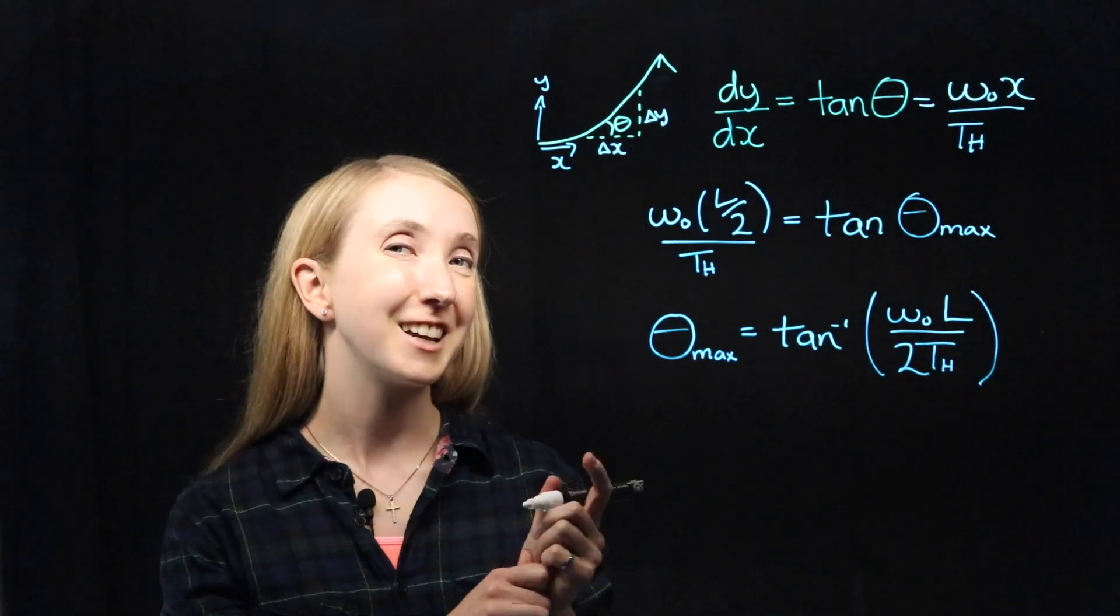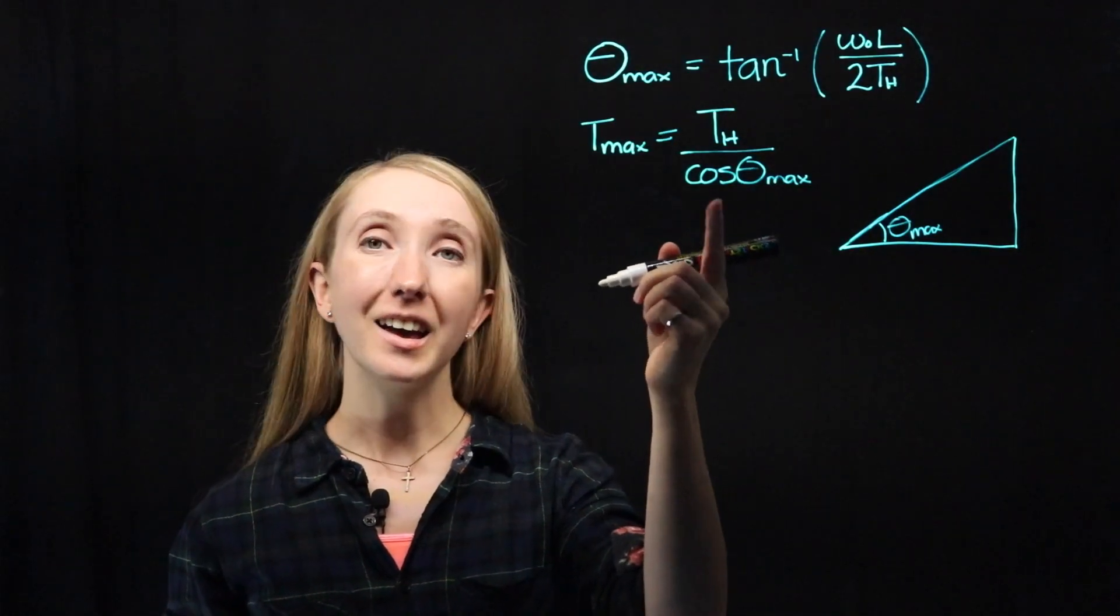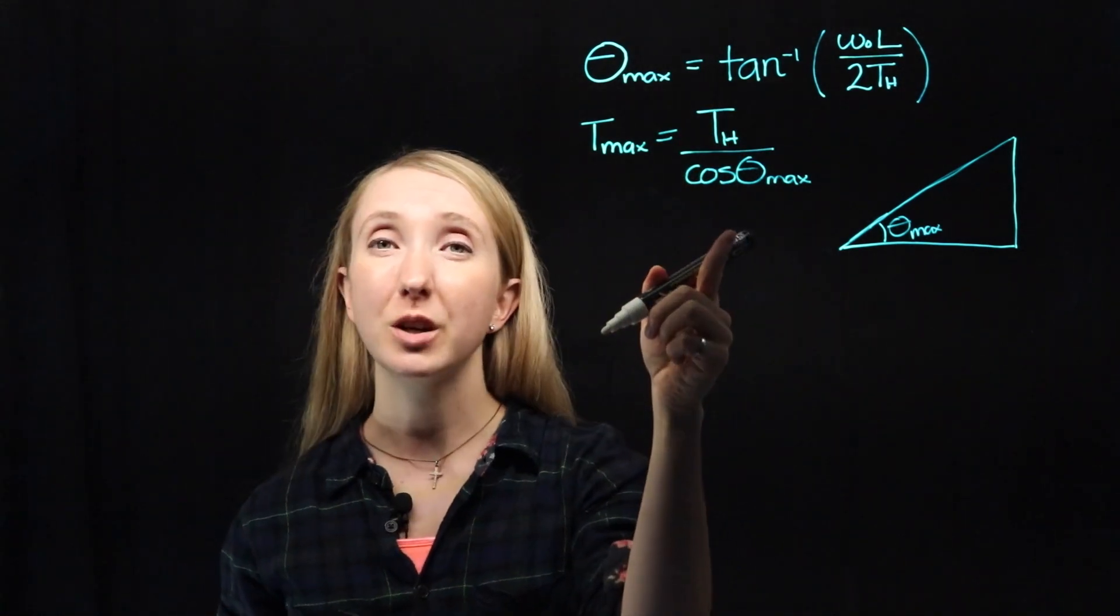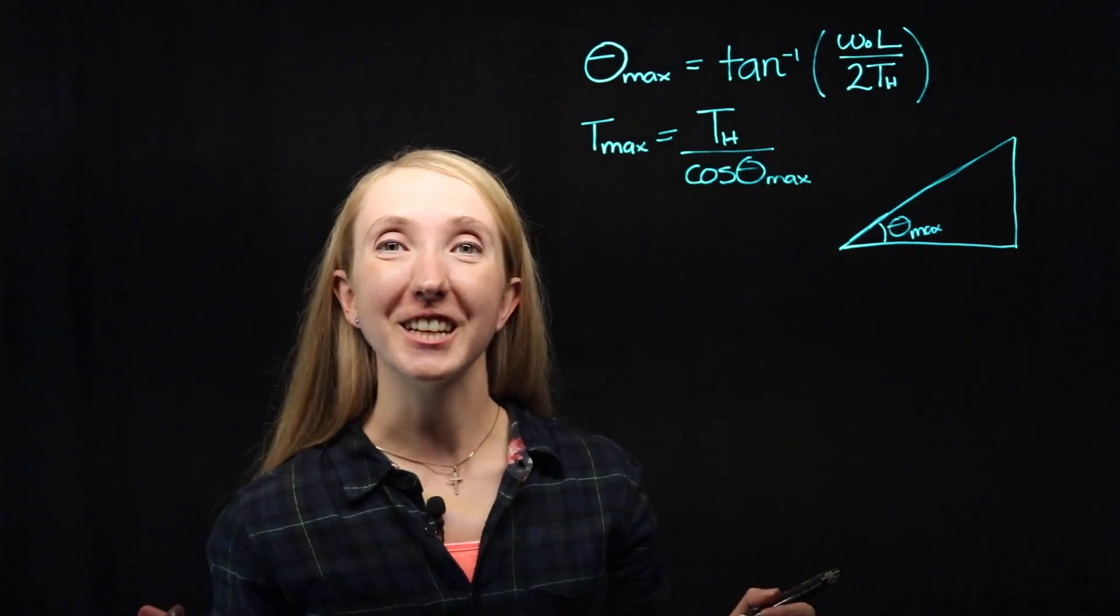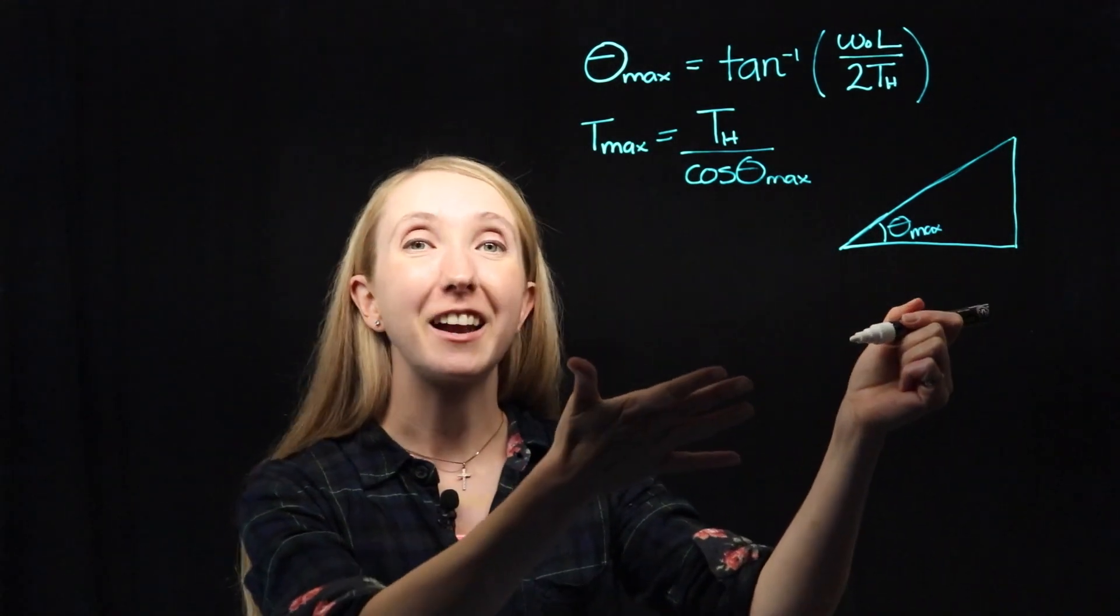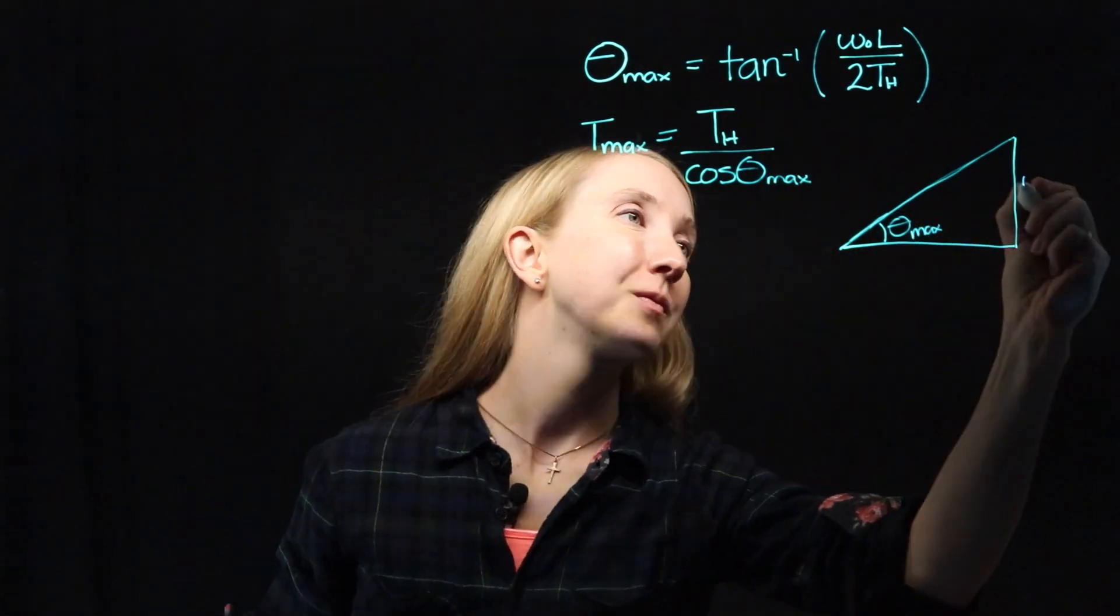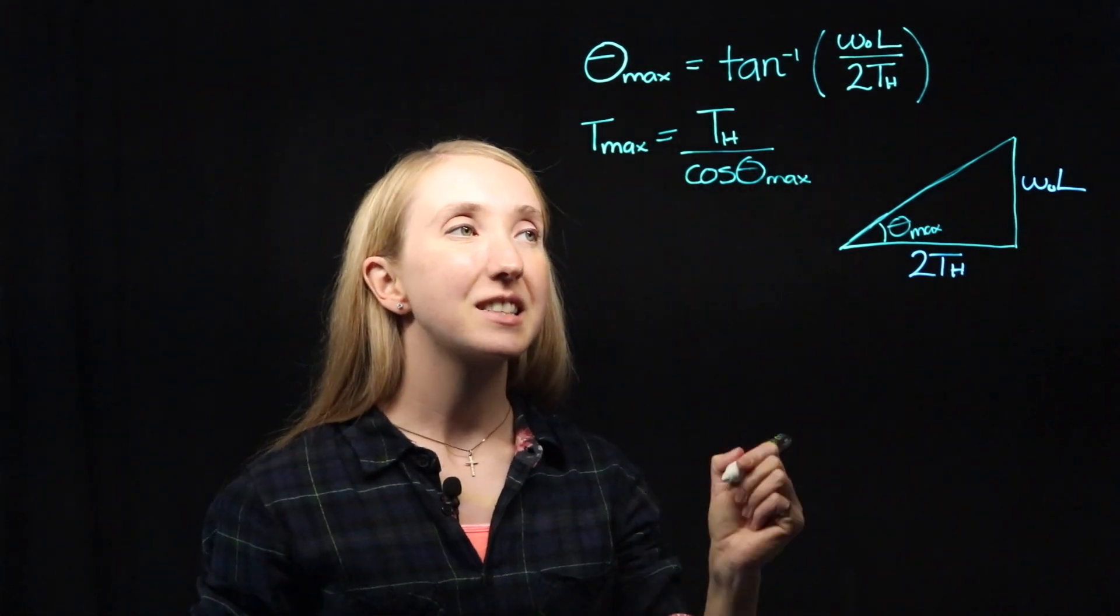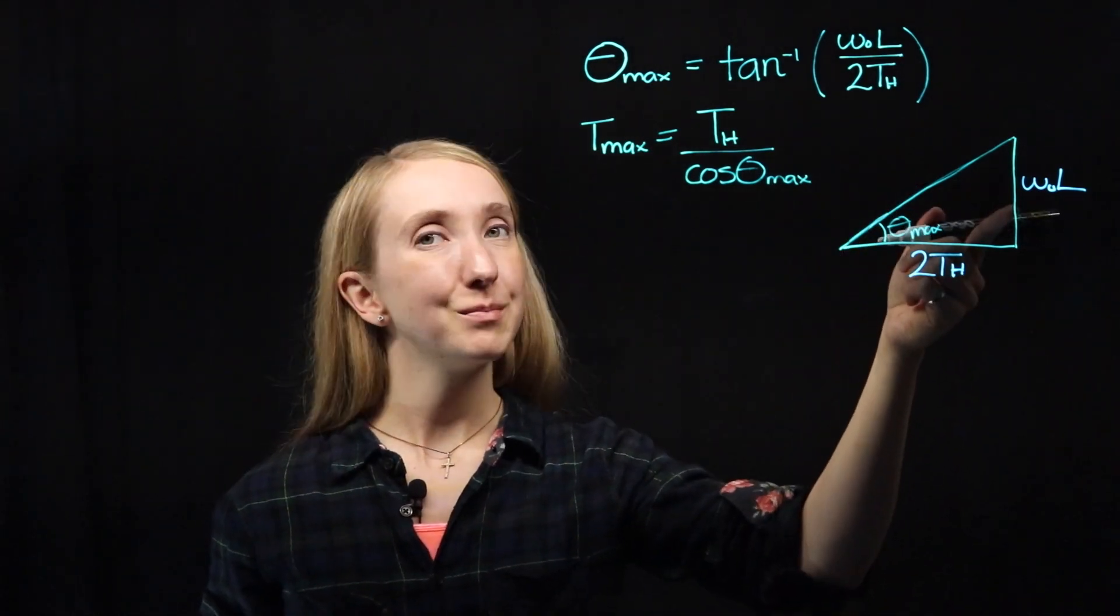We're almost done. Now we've got an equation for our maximum tension and our maximum angle. But I don't want to have to go through both of these equations every time I want a tension. So we're going to use our magical triangle and the fact that tangent just means opposite over adjacent. And we can use Pythagoras to tell us that the hypotenuse should be equal to the square root of a squared plus b squared.